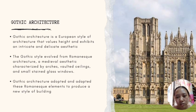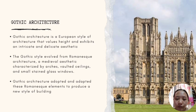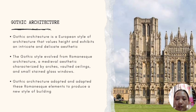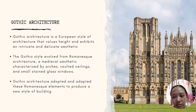Gothic architecture is a European style of architecture that values height and exhibits an intricate and delicate aesthetic. Gothic style evolved from Romanesque architecture — a medieval aesthetic characterized by arches, vaulted ceilings, and small stained glass windows. Gothic architecture adapted these Romanesque elements to produce a new style of building.